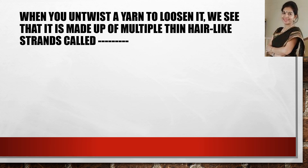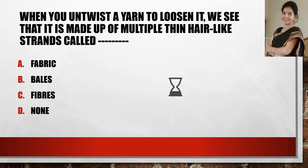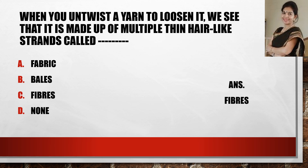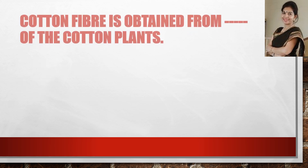When you untwist a yarn to loosen it, we see that it is made up of multiple thin hair-like strands called — these are the options and you have to be quick. The answer is fibers.